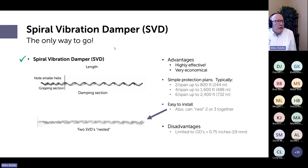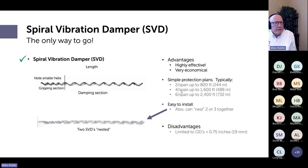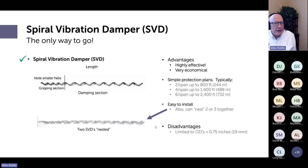SVDs are the only practical vibration damper option for ADSS. They have a large helix and a smaller helix grouping section, and they can be nested. The placement plan is straightforward: two per span up to 800 feet, four per span up to 1,600 feet, six per span up to 2,400 feet. They're relatively inexpensive and easy to install. The one limitation is that for 288-fiber cable the diameter may exceed three-quarters of an inch, which is normally the upper limit for SVDs — consult both the cable and accessory suppliers.